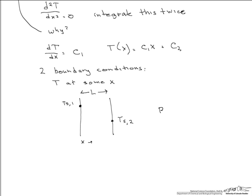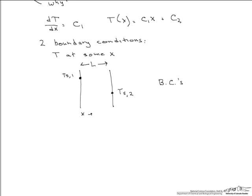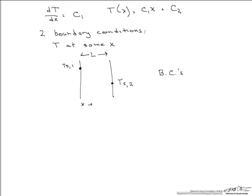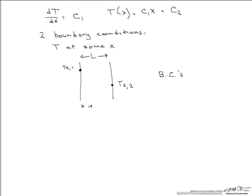So these are our two boundary conditions that we'll use to solve the equation. They're called boundary conditions because we're looking at the two boundaries. What happens at the boundaries? How can we relate x to T? Well, if we look at x equals 0, we see that the temperature there is Ts1.